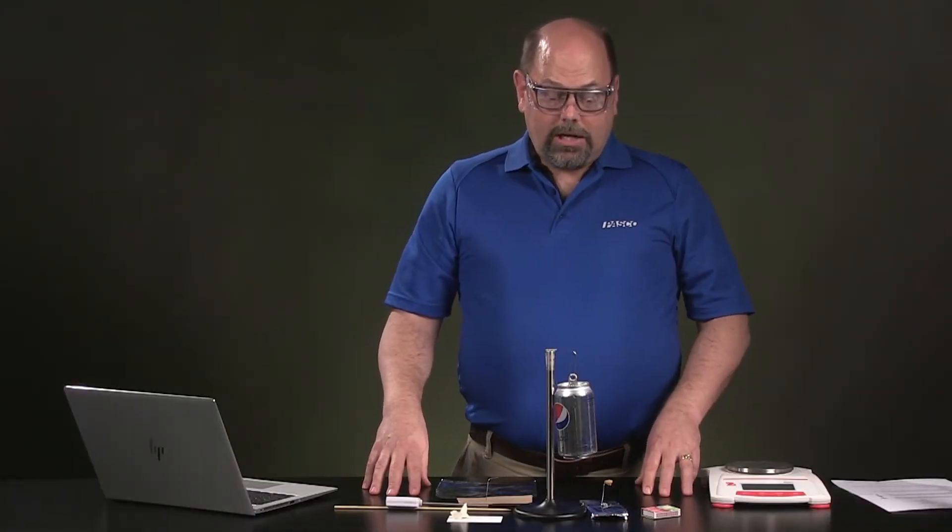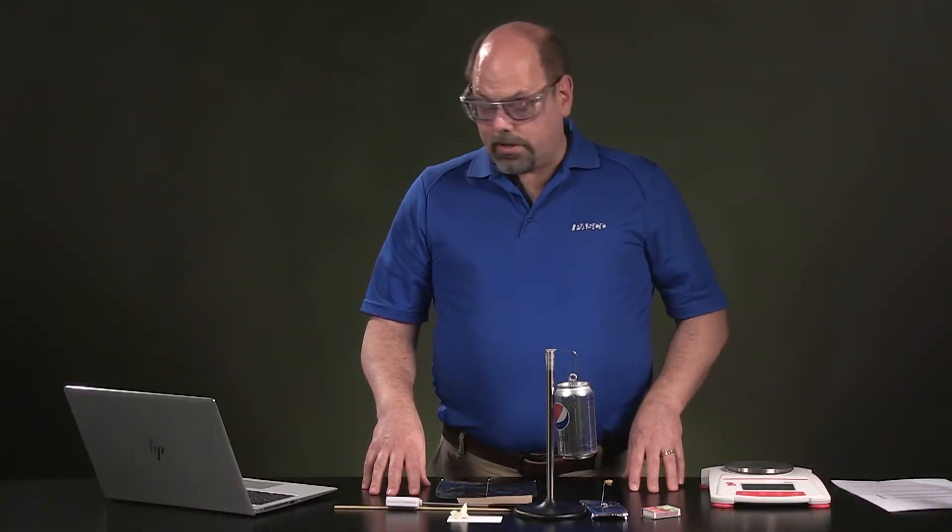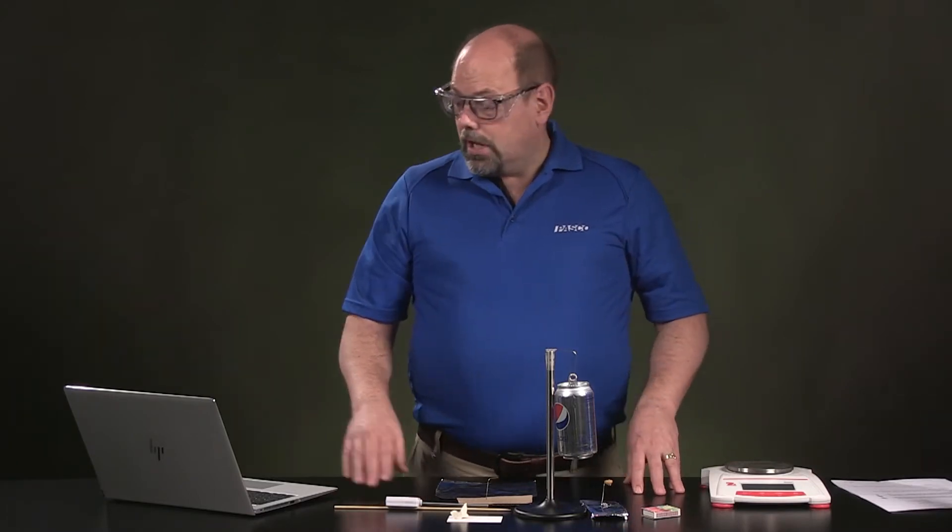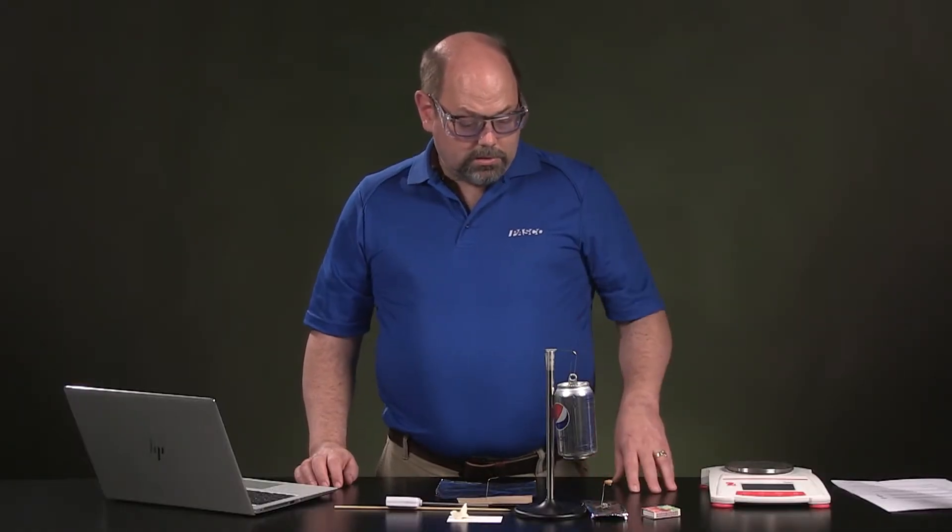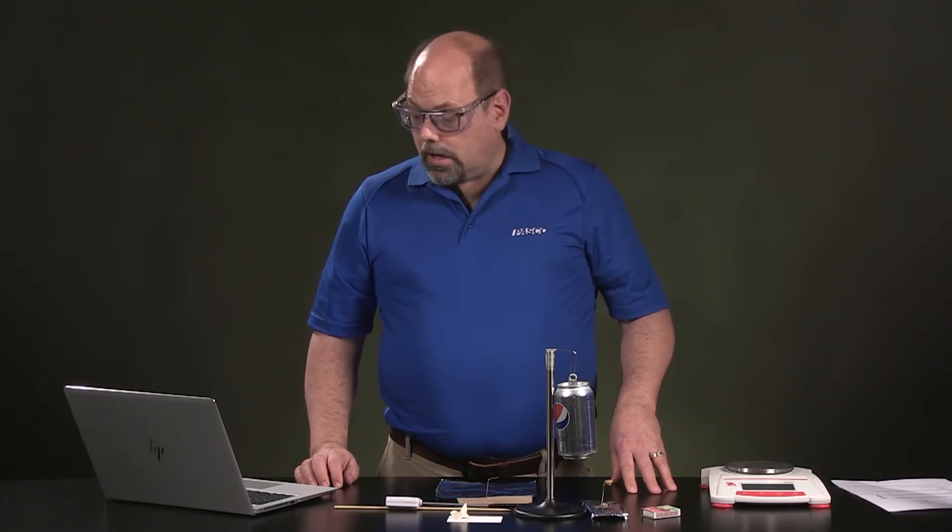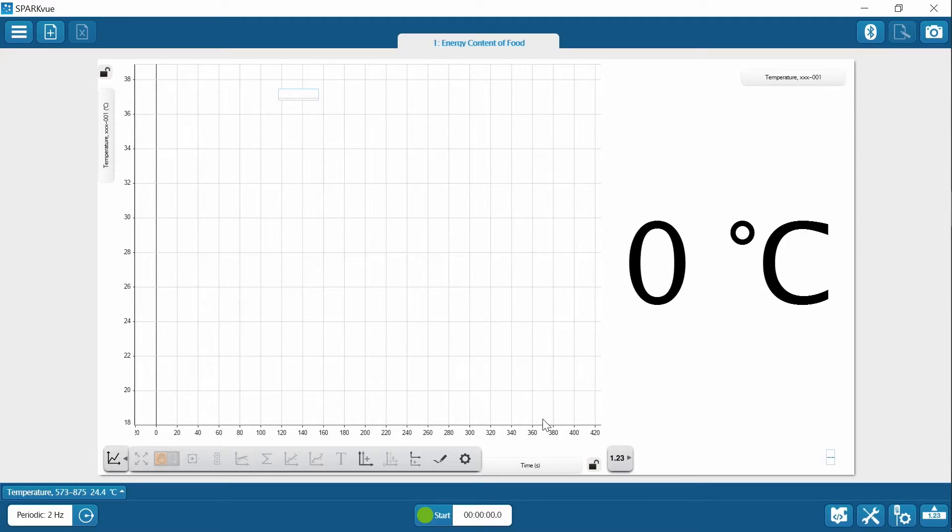Now, to measure the heat change in the water that's going on from the heating from the burning food material, you're going to go over to your computer. And inside of SparkView, you're going to open up the lesson 10 file on energy content of food. When that opens, you're going to get a file that looks like this, which will have a temperature scale across the y-axis to see what temperature the water is that's going on inside of your can. And it's going to have a time graph. You're going to let that time graph roll until either the flame stops when you burn that material up complete, well, as much as you can. And then you'll have a time graph from which you can do the analysis.